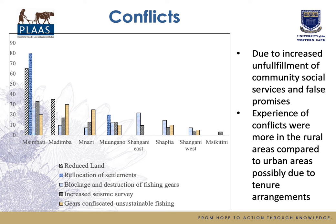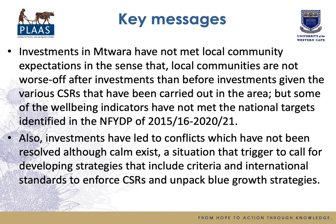The non-focus on social and economic needs is amplified by reported conflicts in the study area. These include: reduced land, relocation of settlements, blockage and destruction of fishing gears, increased seismic surveys, and gears confiscated by marine parks. All of these conflicts were observed in the study.